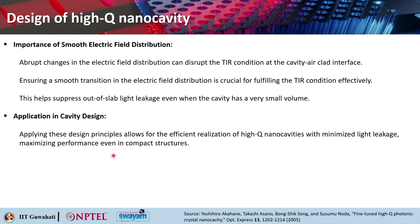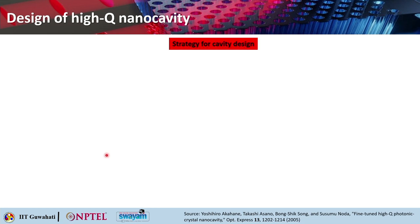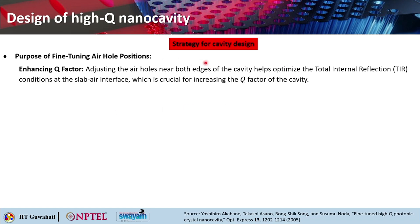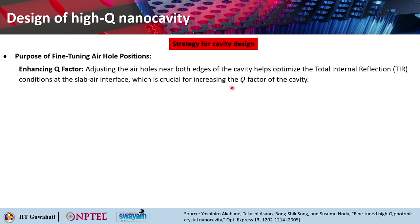Applying these design principles allows you to realize a high-Q nano cavity with minimized light leakage and maximized performance within a compact structure. The important strategies for cavity design include fine-tuning of air hole positions — that small displacement d plays a very important role. Adjusting the air holes near both edges of the L3 cavity helps optimize the total internal reflection condition at the slab-air interface.